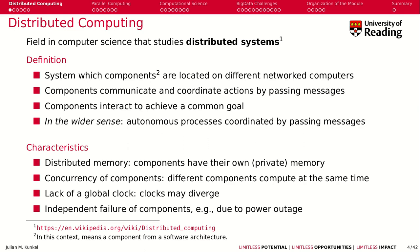A second characteristic is the concurrency of components. The different components are supposed to compute at the same time — like two people doing a task simultaneously. Independent of each other was our first characteristic, that is 'distributed,' but now they are also concurrent. Concurrency means really doing things at the same time.